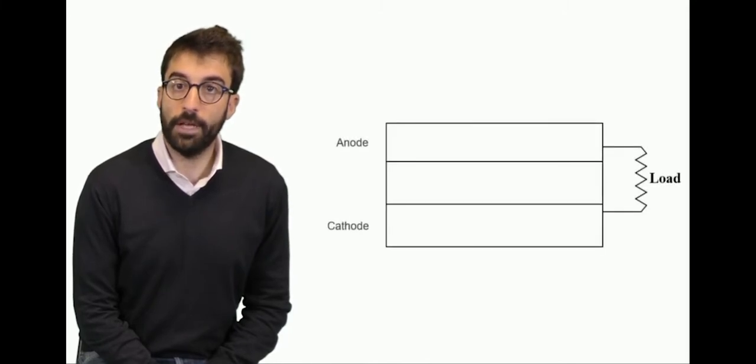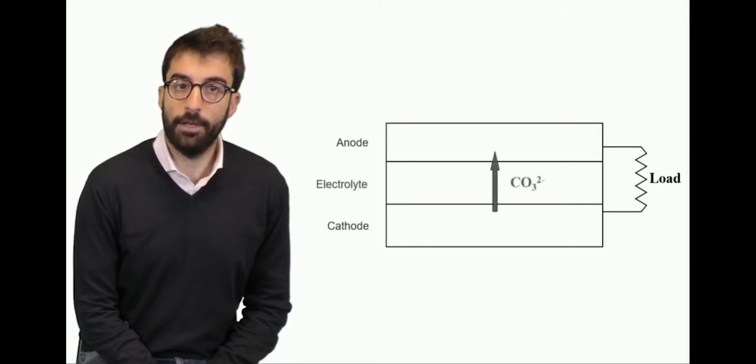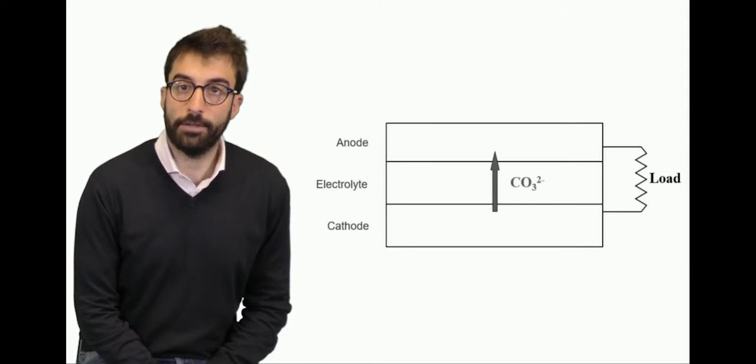Like all fuel cells, molten carbonate fuel cells are composed of three layers: the anode, the cathode, and the electrolyte. In this case, the electrolyte is made by molten carbonates. So carbonates migrate from the cathode to the anode while externally energy is supplied to a load.